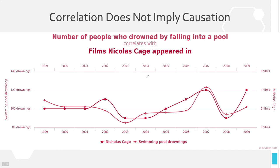One of the most important points in all of statistics is that correlation does not imply causation. Here we have Nicolas Cage's number of films per year, which seems to pretty well mirror swimming pool drownings. But that is just a coincidence — it is definitely not one causing the other to happen. Correlation does not imply causation.